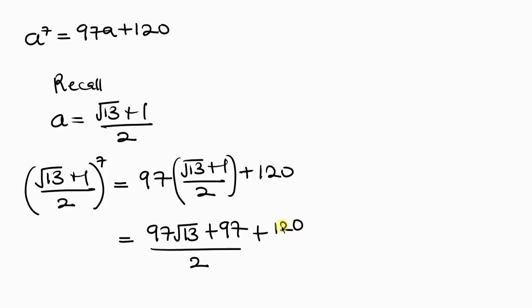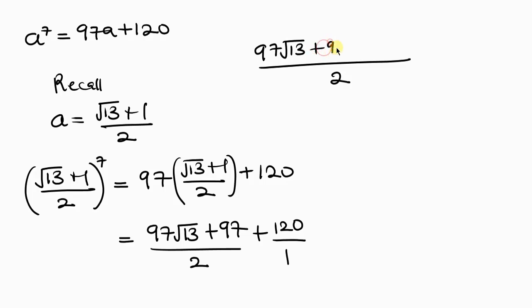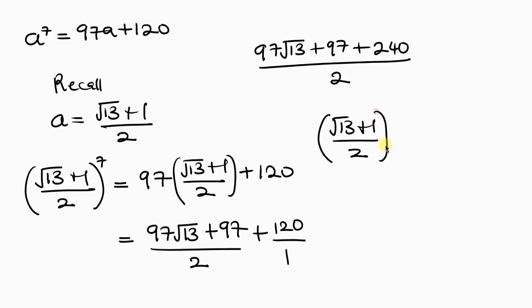Taking the LCM of 2 and 1, which is 2: 2 divided by 2 times (97 times the square root of 13 plus 97) plus 2 divided by 1 times 120, which is 240. Adding together, the expression (square root of 13 plus 1) over 2, all raised to the 7th, equals 97 times the square root of 13, plus 97 plus 240 — which is 337 — all over 2. That is our final answer.